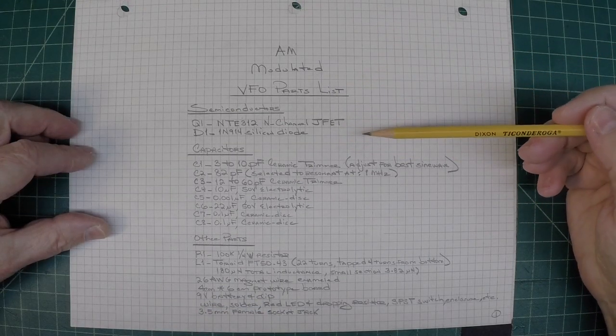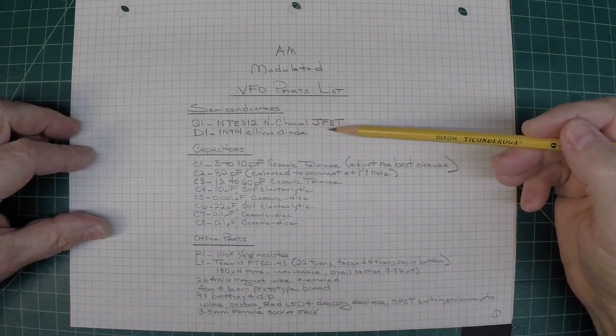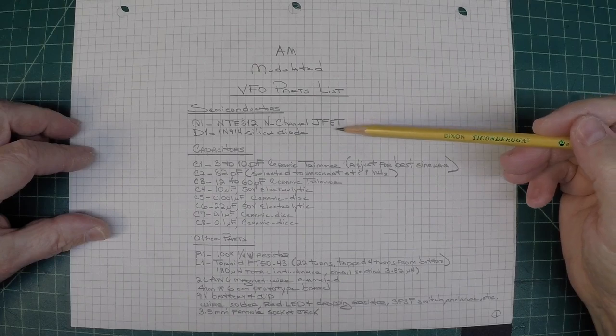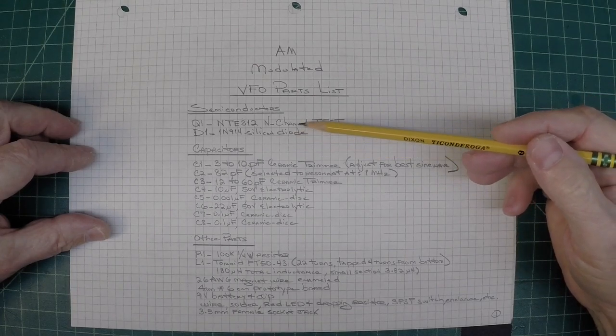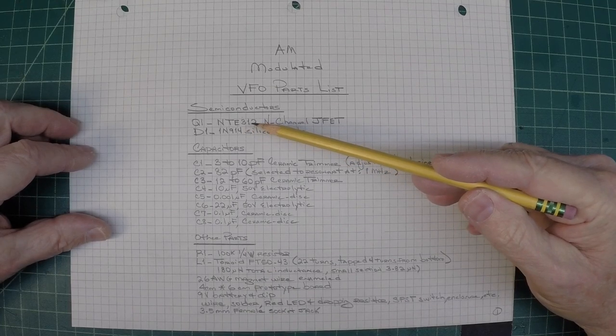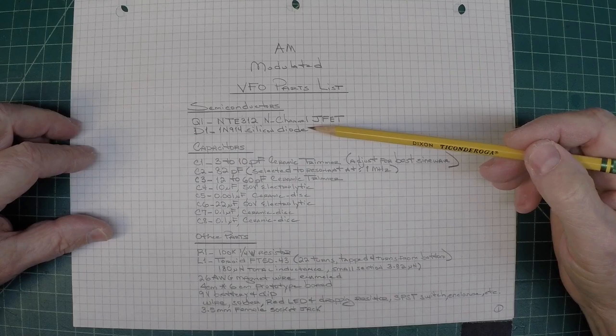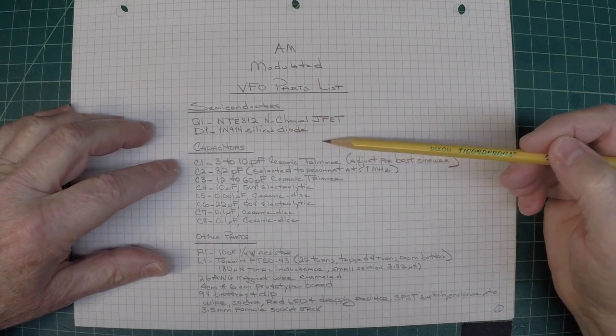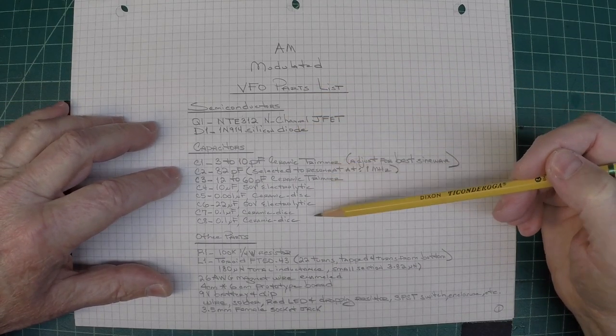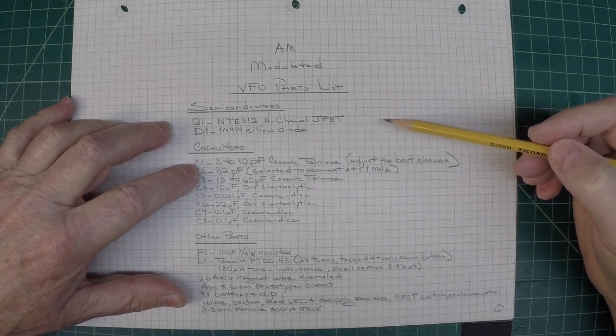Here's the parts list that I just referenced. The NTE 312 n-channel JFET that I had on hand that I used. I had a couple MPF 102s but I think I had cooked those in a previous breadboarding exercise so they were no good. They were shorted. And let's see, the capacitors that I just mentioned, they're called out here.